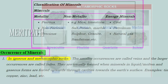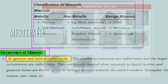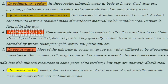Minerals in igneous and metamorphic rocks: smaller occurrences are called veins and larger occurrences are called lodes. They are usually formed when minerals in liquid, molten, or gaseous forms are forced upwards through cavities towards the earth's surface. Examples include tin, copper, zinc, and lead.